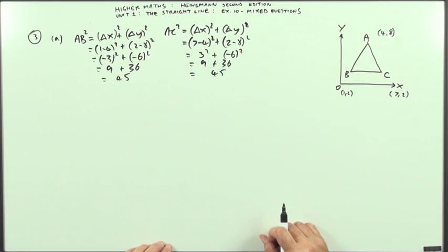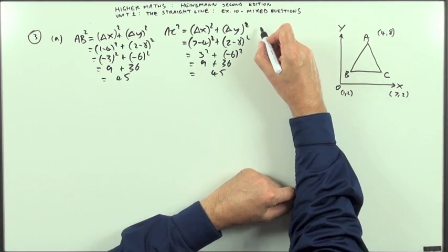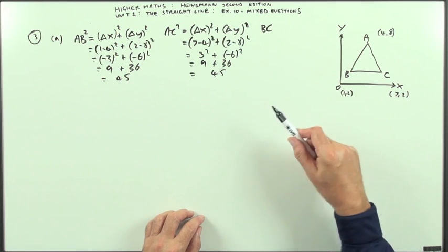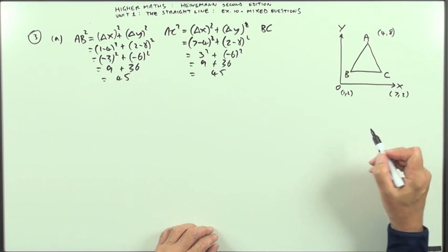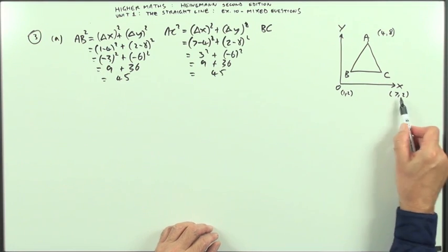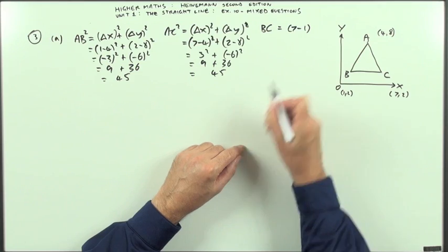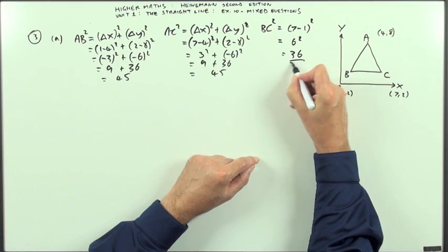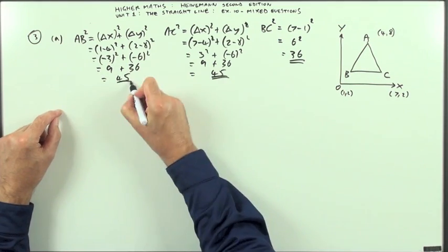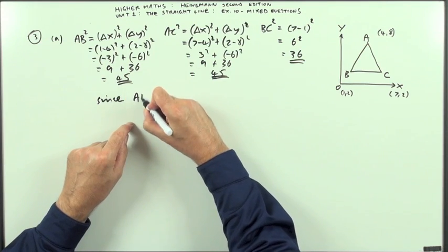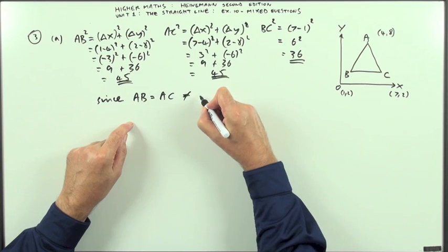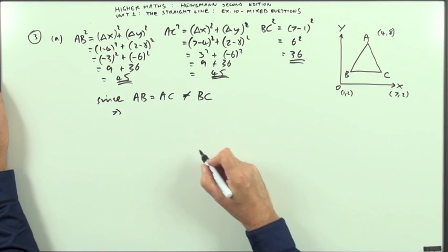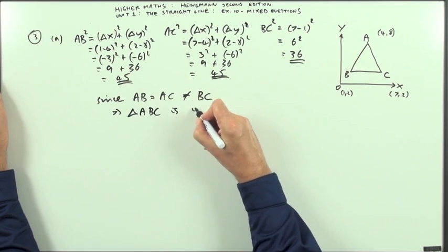Now if the squares are the same, the square roots are the same. So to compare them all, I can compare their squares. So one thing left is BC, but you don't need to use Pythagoras for BC because it's a horizontal line. You only use Pythagoras with sloping lines, so the distance from B to C you can state straight away. It goes from 1 to 7, so it's going to be 7 minus 1. Or if I want to square it just to compare the squares, so that means I've got 6 squared, which is 36. And then you can make a statement. Since AB is equal to AC, but it's not equal to BC, the squares are the same, the square roots are the same. That means that two sides are the same, that means that triangle ABC is isosceles.